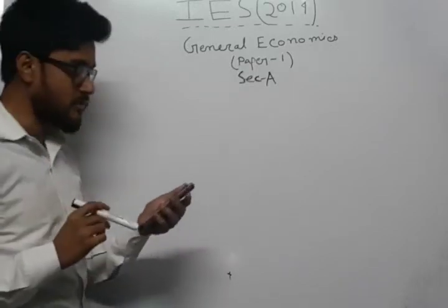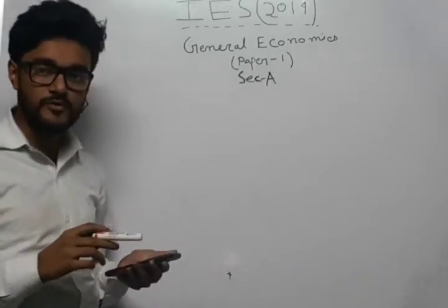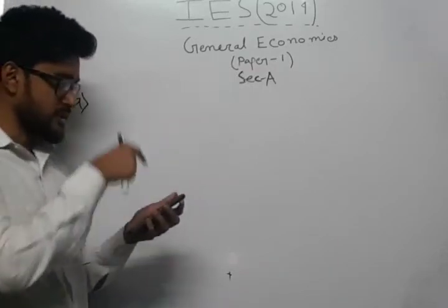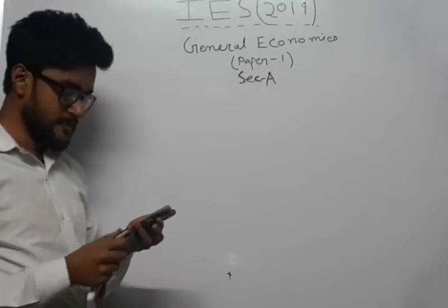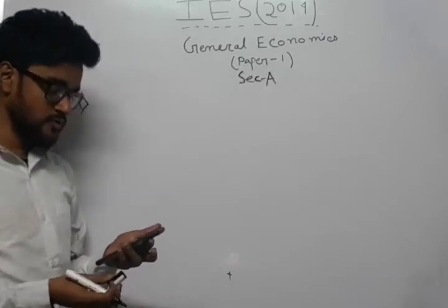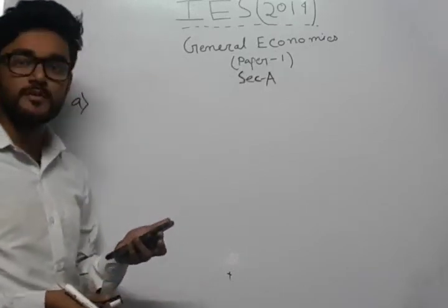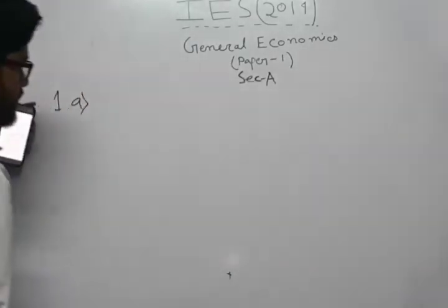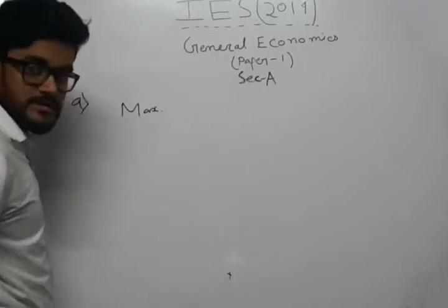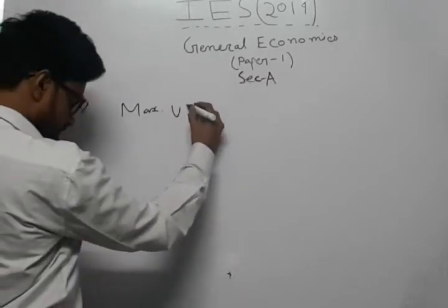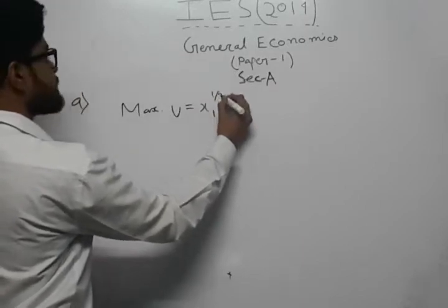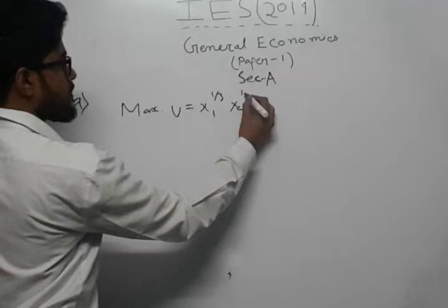First, I will read out the question and write down the important things given in it. The utility function is of the form x1 to the power 1 by 3 into x2 to the power 1 by 3. We need to write down the maximization of utility, which equals x1 to the power 1 by 3 times x2 to the power 1 by 3.